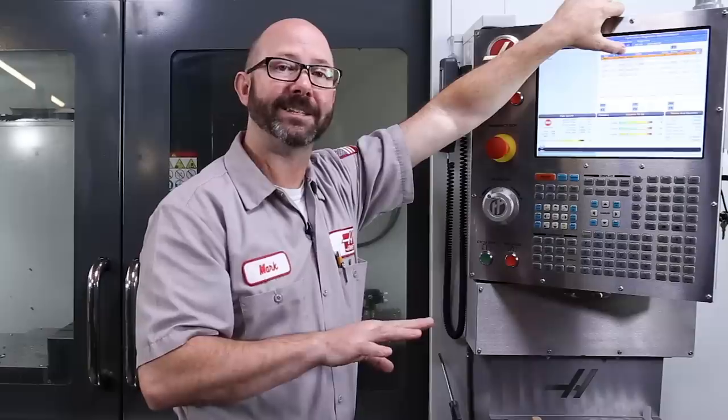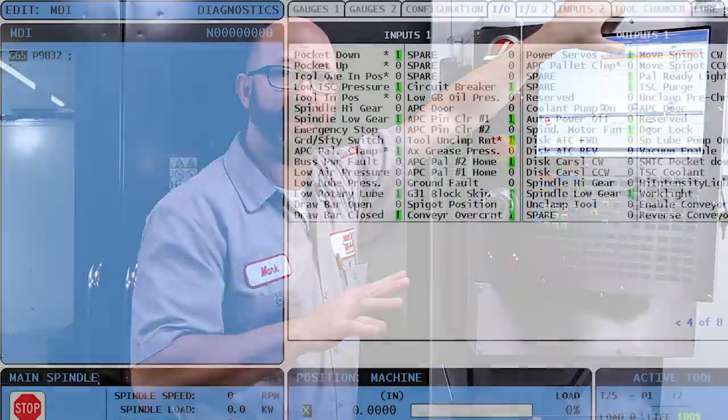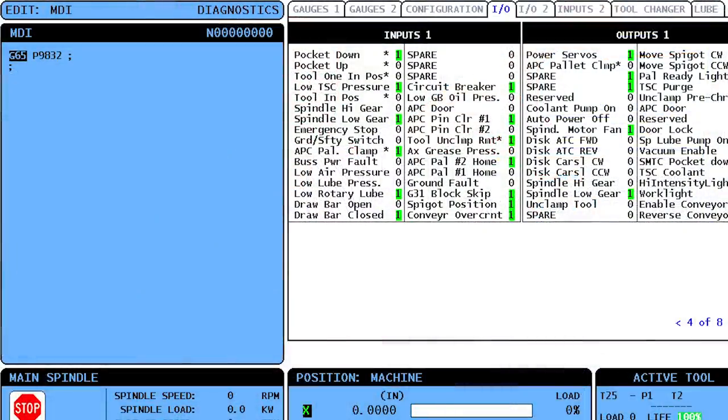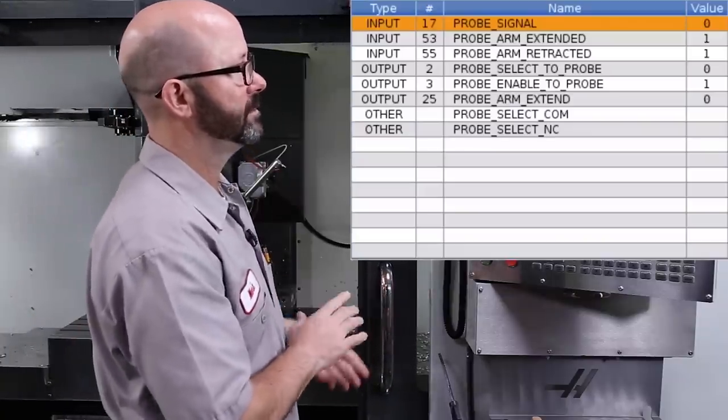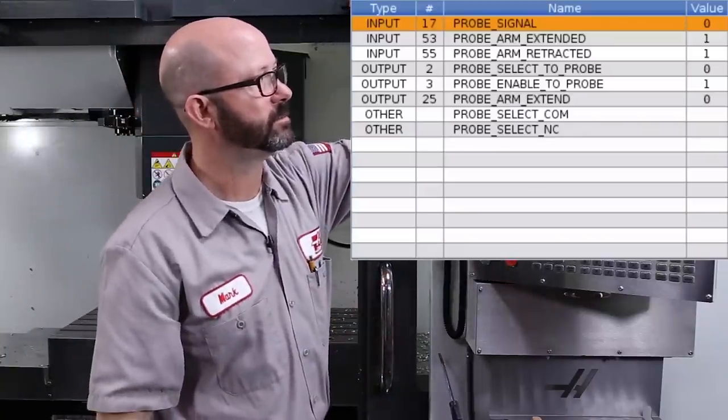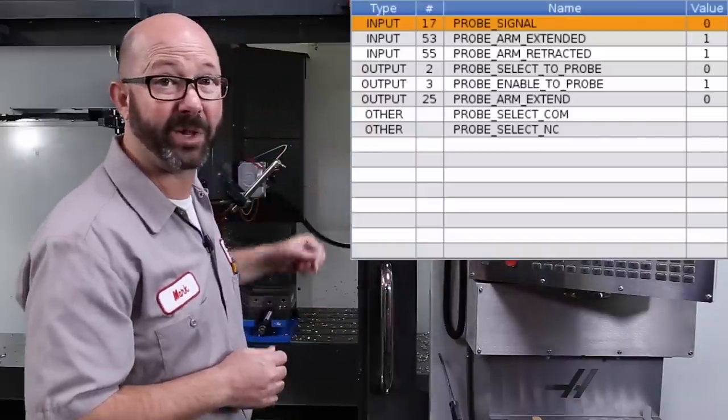If you were on a classic Haas control, you would see this same thing on the input output diagnostics page, but it would be called skip signal. Same exact thing. So with my probe on and our probe signal showing here, it says value of zero. I'm going to flick that probe.